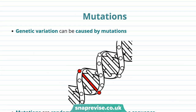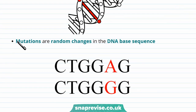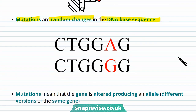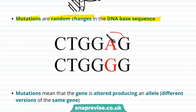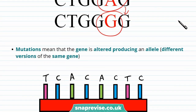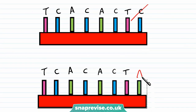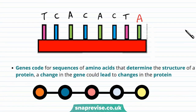Genetic variation can be caused by mutations. Mutations are random changes in the DNA base sequence. Here you can see that the A has turned to a G — this is called a mutation. This means that the gene can be altered, producing an allele, or different version of the same gene. For example, this C here can change to an A, and this mutation creates a different version of the same gene.